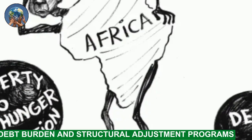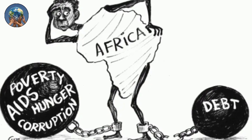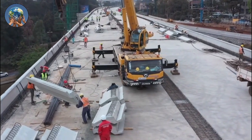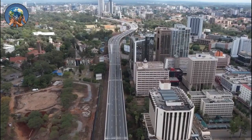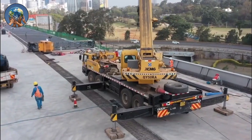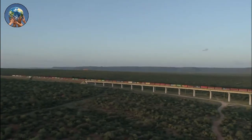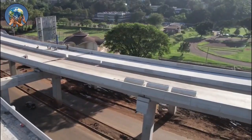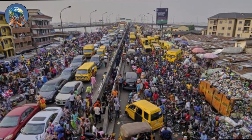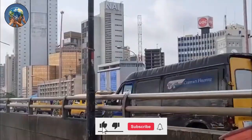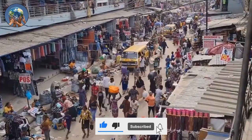Number three: Debt burden and structural adjustment programs. Debt has been a significant challenge for many African nations. Accumulated debt, often incurred for development projects, has become a burden that diverts resources away from essential services. Structural adjustment programs imposed by international financial institutions have at times exacerbated economic hardships, sometimes prioritizing debt repayment over social services and leading to austerity measures that disproportionately affect the most vulnerable populations.